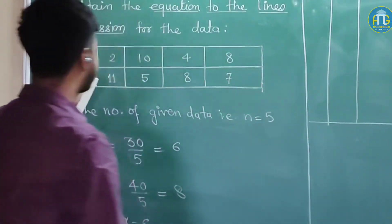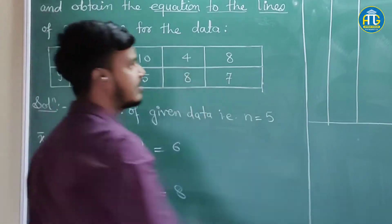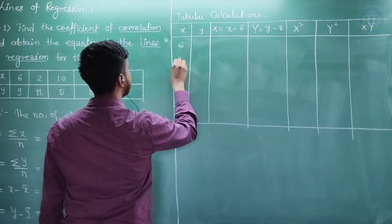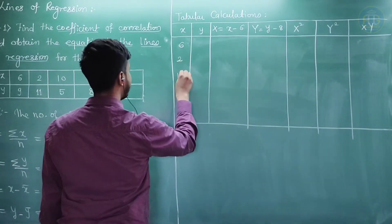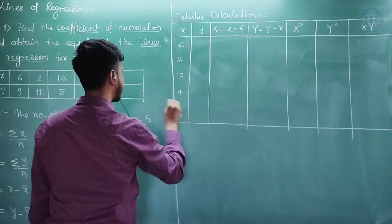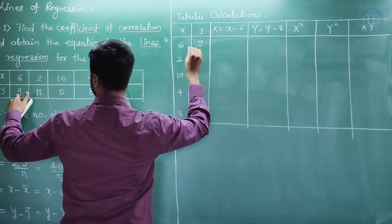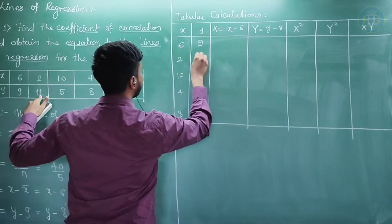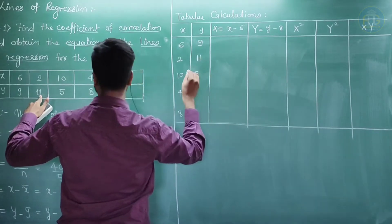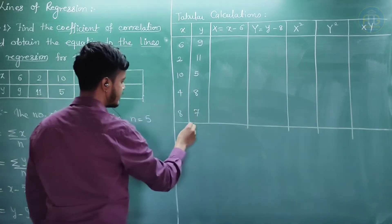The values of x are: 6, 2, 10, 4, 8. And the corresponding values of y are: 9, 11, 5, 8, 7.